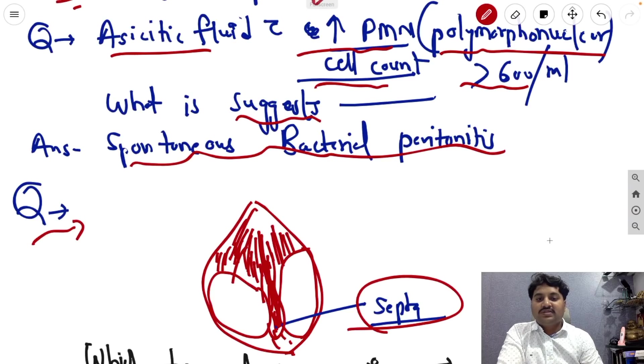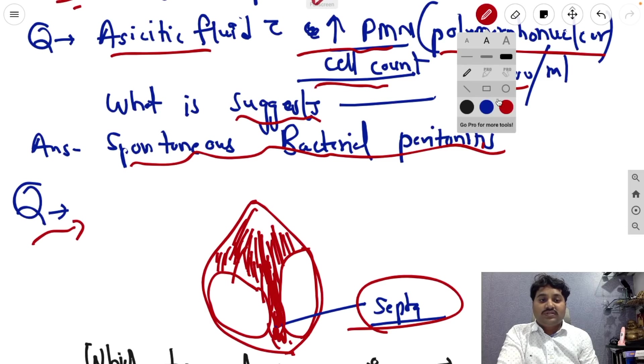Next question, a very bad image I am able to draw here of the vaginal portion showing the septa in this image. So this is the septate hymen.